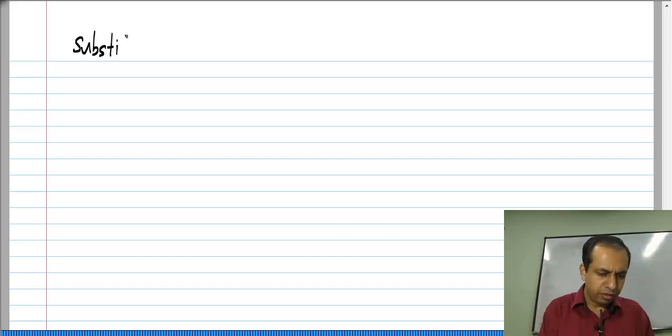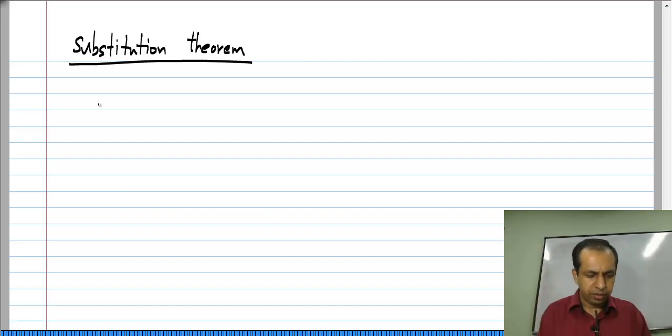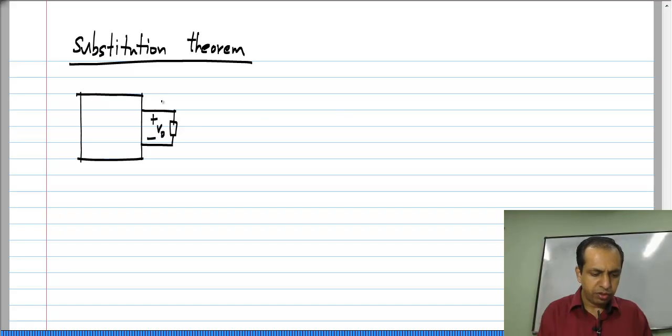Now, let us consider substitution theorem. So, here again I said that if I have any circuit, in this case it does not matter whether it is linear or non-linear, whatever it is, and under certain conditions a given element, it could be a resistor it could be something else also, it has a certain voltage V_0 across it and certain current I_0 through it.